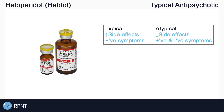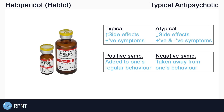Typical antipsychotics are used in the treatment of positive symptoms of schizophrenia, which are thoughts, feelings, or actions that are added onto a person's regular behaviors. Something like hallucinations is something that would be added onto a person's regular behavior and is an example of a positive symptom.